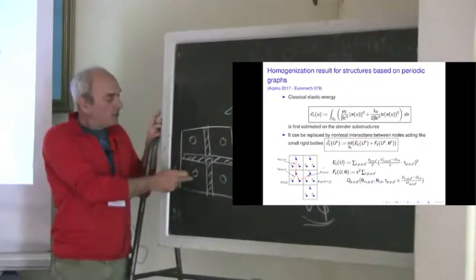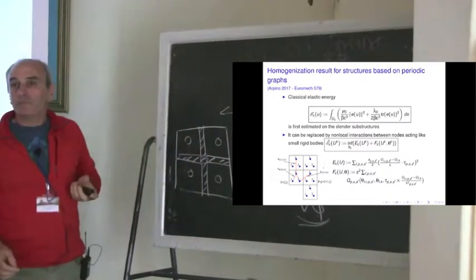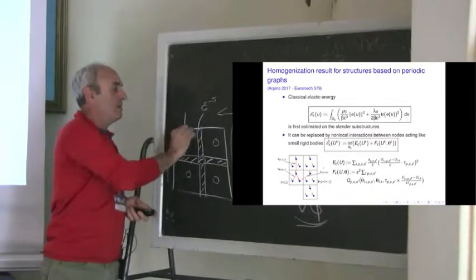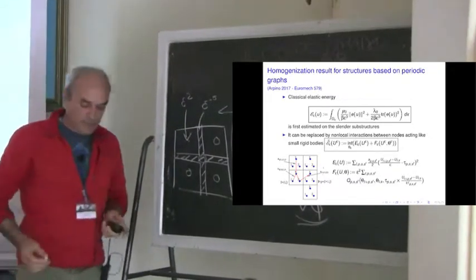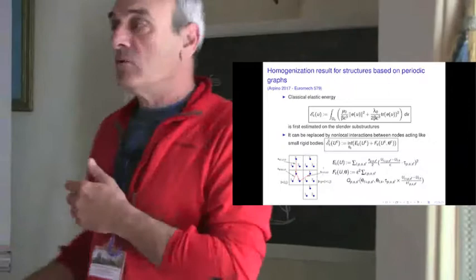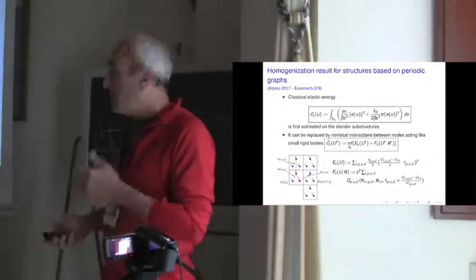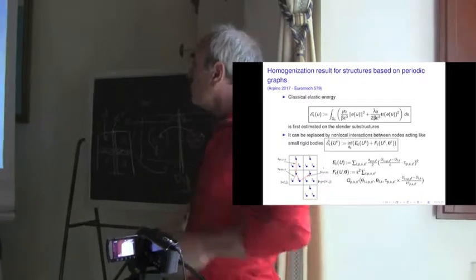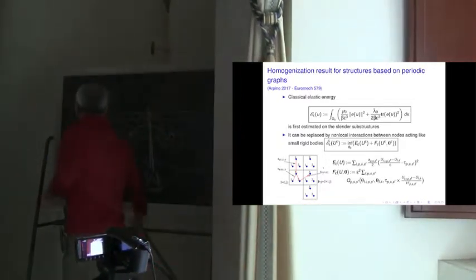If you do not like voids, you can think about very weak material and the result will be the same. So here you have something like epsilon to the power minus 5 and here epsilon to the power 2, and that will work. Epsilon here is a ratio between the microscopic length and macroscopic length, and I am working in the framework of asymptotic analysis so I let epsilon tend to zero. So I start with a classical elastic energy, homogeneous, isotropic, and a very high coefficient inside the material.